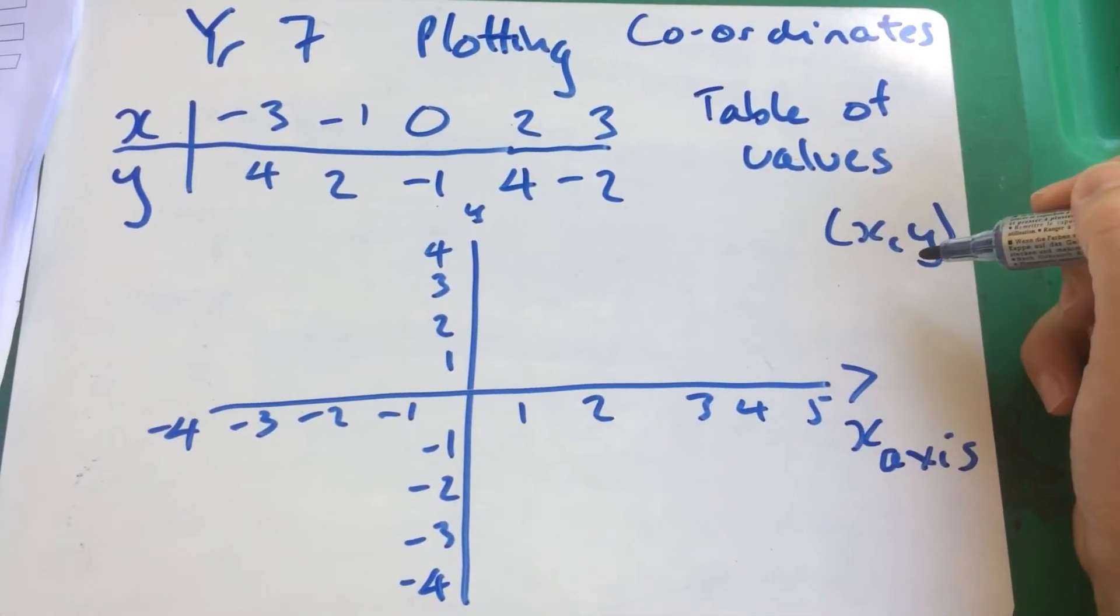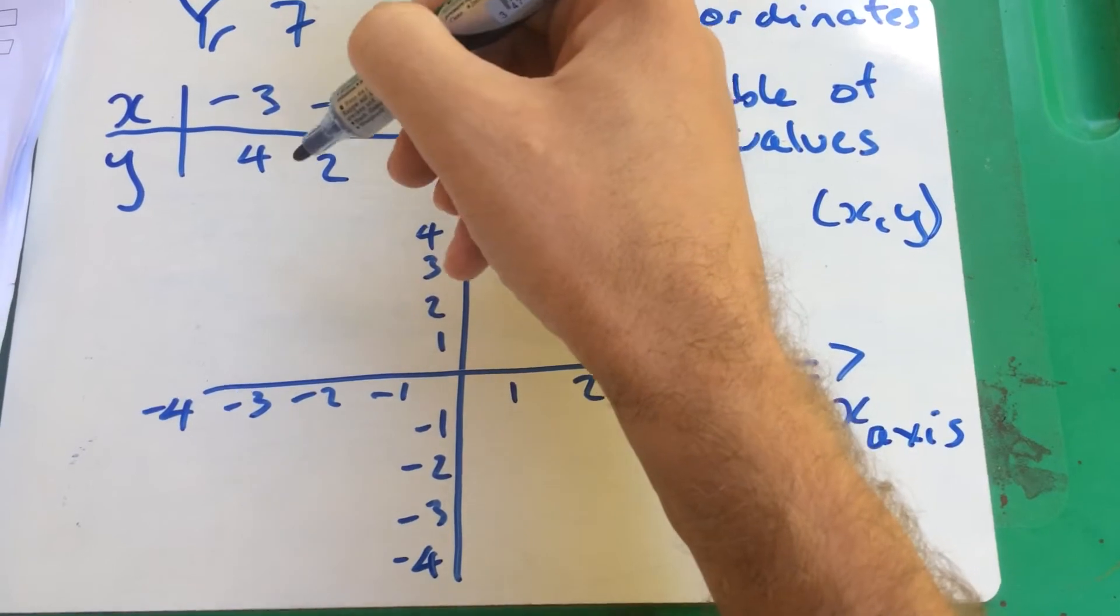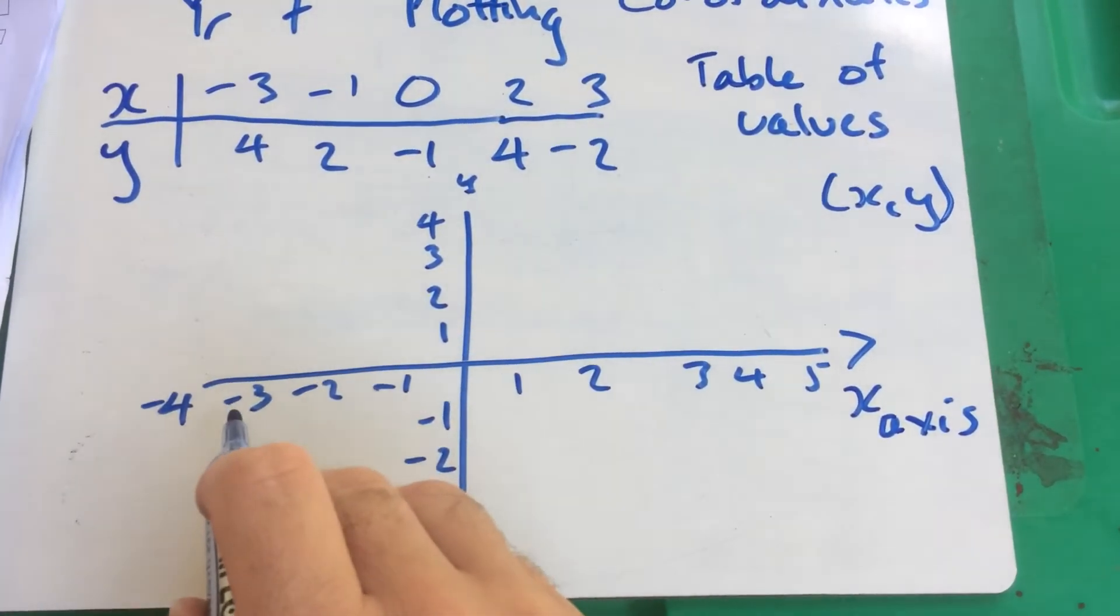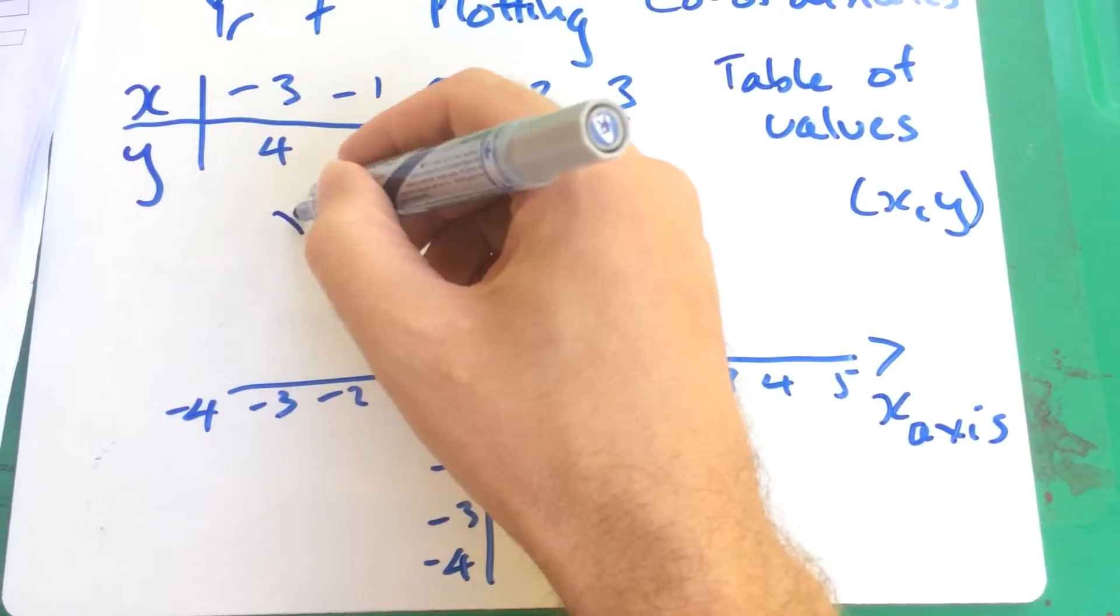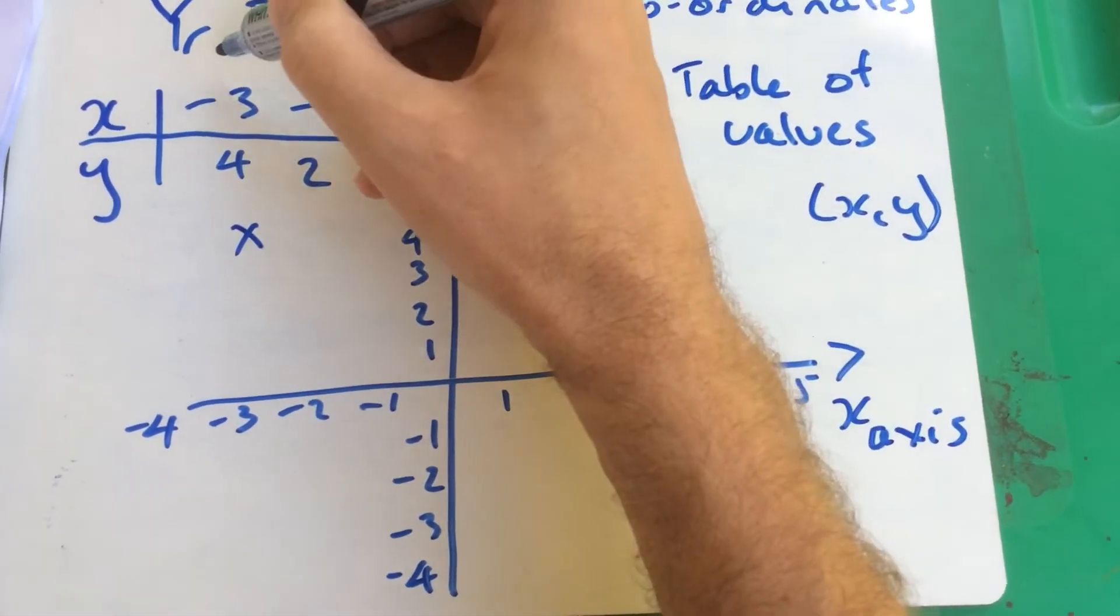Now, remember, we always do x and then y. So let's take that first pair, minus 3 and 4. So go to minus 3 on x, up to 4. And maybe we'll label that A.